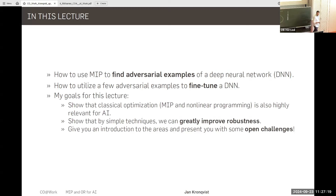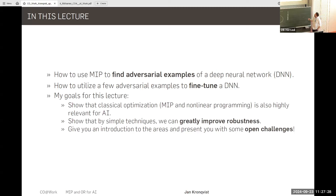I want to show that by very simple techniques we can greatly improve robustness of neural networks. I don't pretend to have all the answers here — many of these are highly relevant open problems, and we have an idea of how to solve them, but we definitely don't have the best thing figured out. So these are really open challenges.